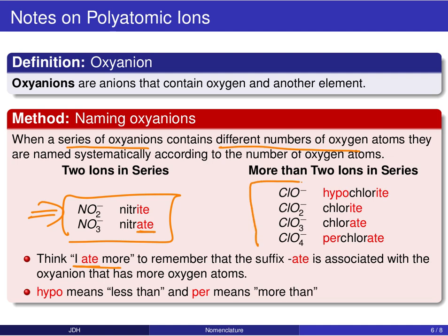Sometimes, as with the chlorine oxyanion series, you have more than just two ions in the series. We then use prefixes to denote relative numbers of oxygen atoms. 'Hypo-' means less than, so ClO− is named hypochlorite — fewer oxygens than chlorite. Chlorate has more, and if you have an entry with even more oxygens beyond chlorate, we use the prefix 'per-,' meaning more than, giving perchlorate.